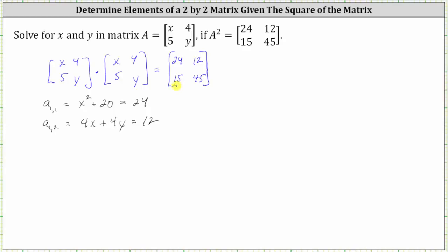The 15 of the product is in row two, column one, which means we multiply row two of the first matrix and column one of the second matrix.